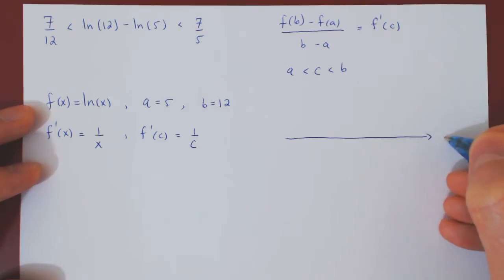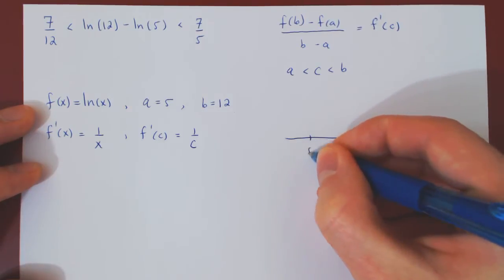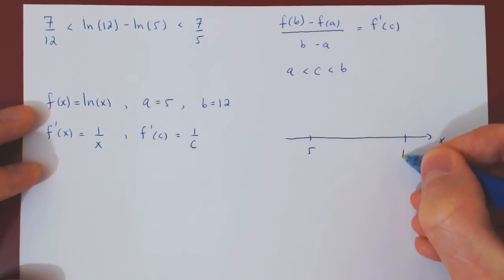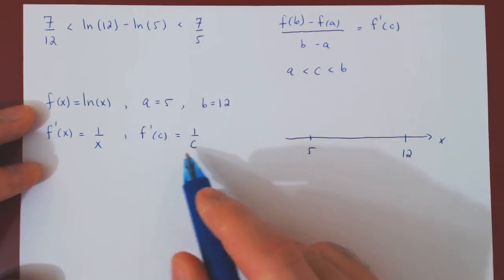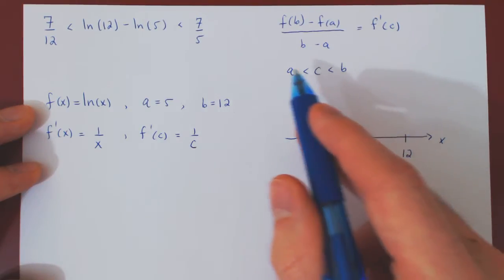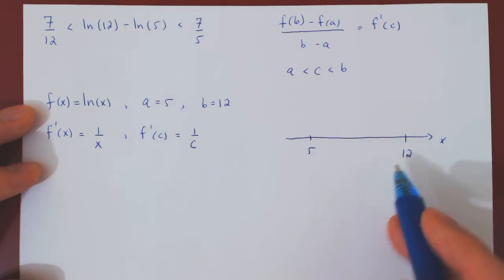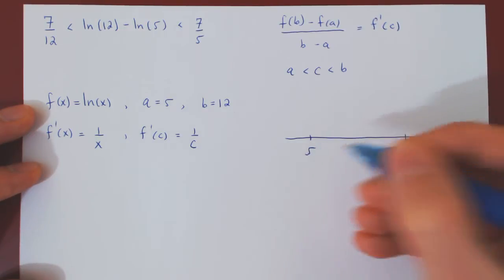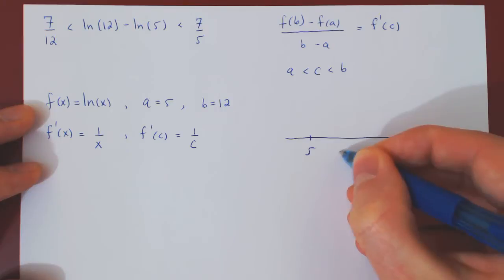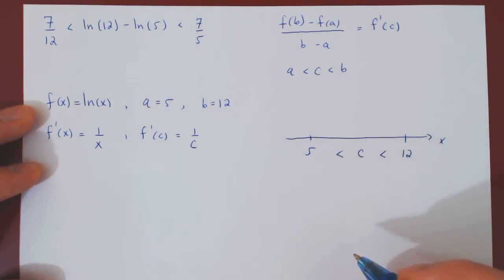If we visualize our interval, a is 5, b is 12, and we don't know too much about c, except that it lies somewhere between a and b. Therefore, it lies somewhere between 5 and 12. So c is larger than 5, but smaller than 12.